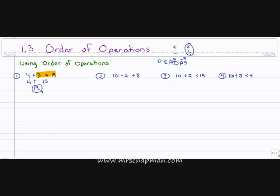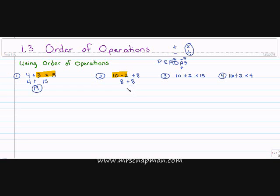Let's take a look at number two: ten minus two plus eight. No parentheses, no exponents, and no multiplication or division. I have subtraction and addition. Even though PEMDAS lists addition before subtraction, I need to solve left to right — so ten minus two comes first, which is eight. Then eight plus eight is sixteen.